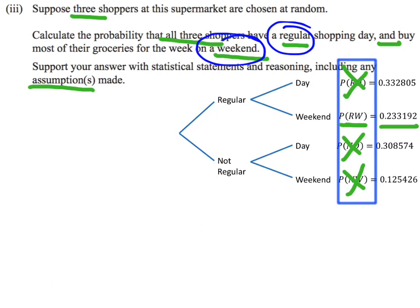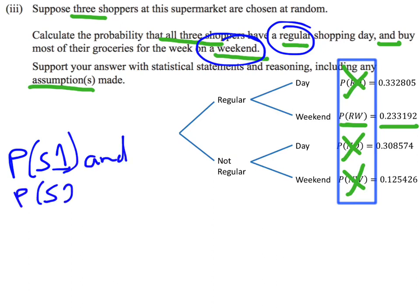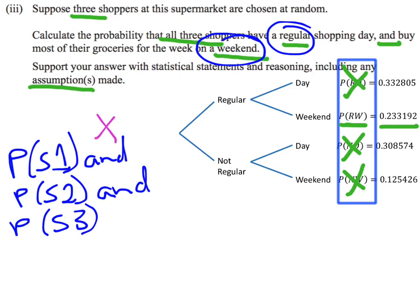That's the probability for a single person chosen at random meeting this criteria. But we need to think about it in terms of three shoppers. We need the probability of shopper 1 and shopper 2 and shopper 3. Remember, in probability terms, 'and' means multiply. So the probability for all three is 0.233192 raised to the power of 3.